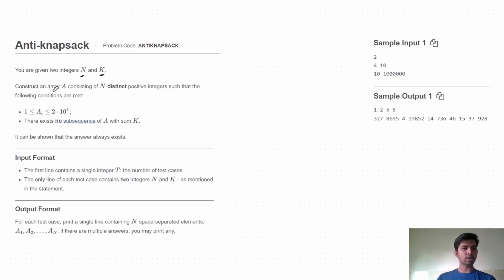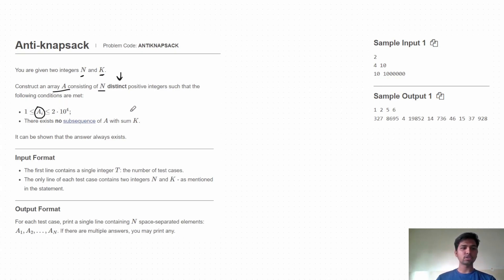We need to construct an array A of size n where all elements are distinct, each element lies between 1 and 20,000 inclusive, and we need to satisfy one condition: no subsequence of this array A should have a sum equal to k.